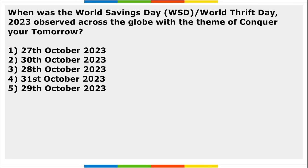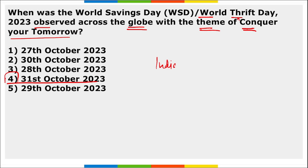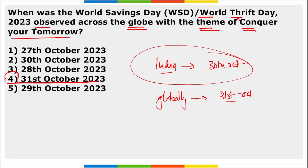World Savings Day or World Thrift Day is observed globally on 31st October with the theme 'Conquer Your Tomorrow.' India observes it on 30th October because India's former Prime Minister Indira Gandhi passed away on 31st October. Globally it is 31st October, but India observes it on 30th October for this reason.